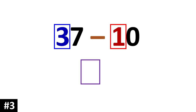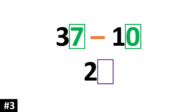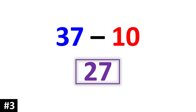How about 37 minus 10? First, we ignore the ones column and just focus on the 10s. 3 minus 1 gives us 2. We look to the ones: 7 minus 0 is 7. So our answer is 27.